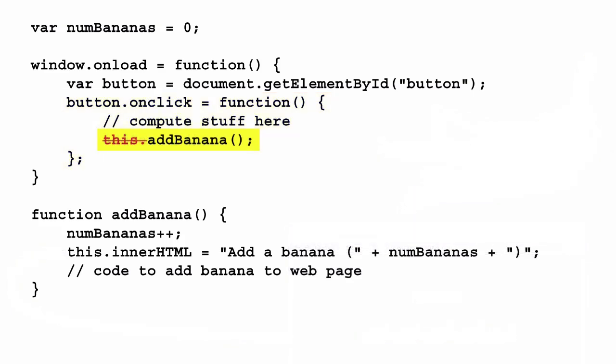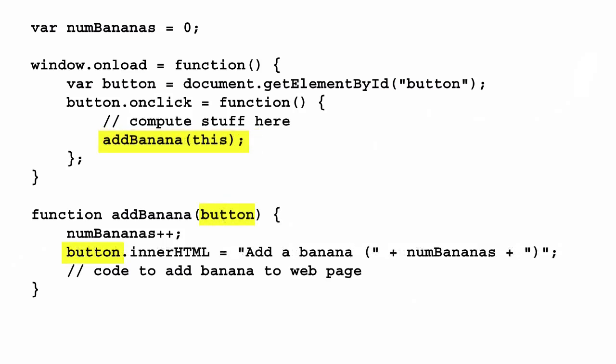You might think you can change the code in the anonymous function to call `addBanana` as a method of the button, but that won't work because `addBanana` isn't a method of the button anymore — it's just a regular function. So one solution is to pass along the value of `this` to the `addBanana` function, just like we did before, making sure that we give the parameter a name other than `this`, like `button`, and change the code in `addBanana` to use that parameter name instead.